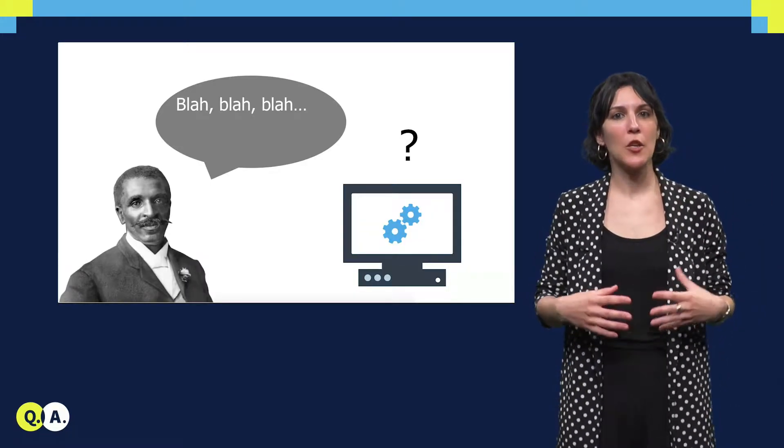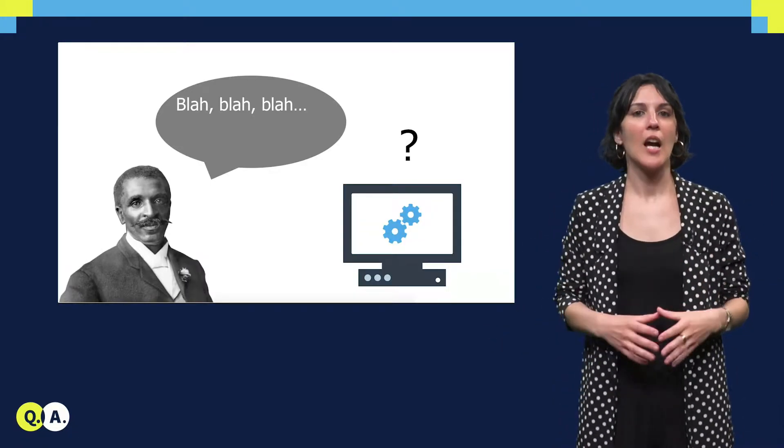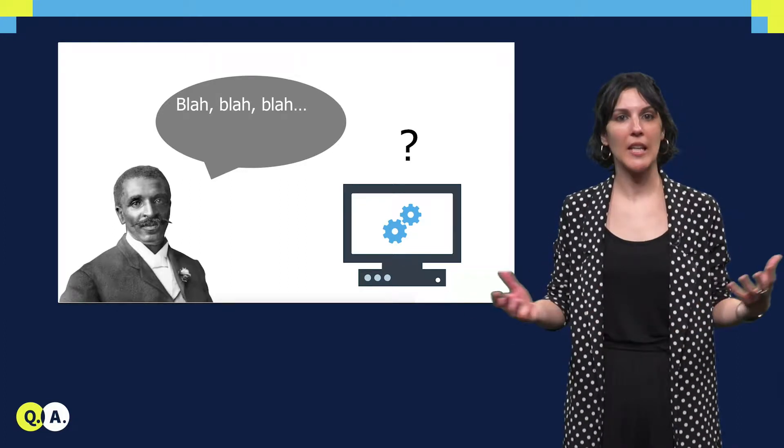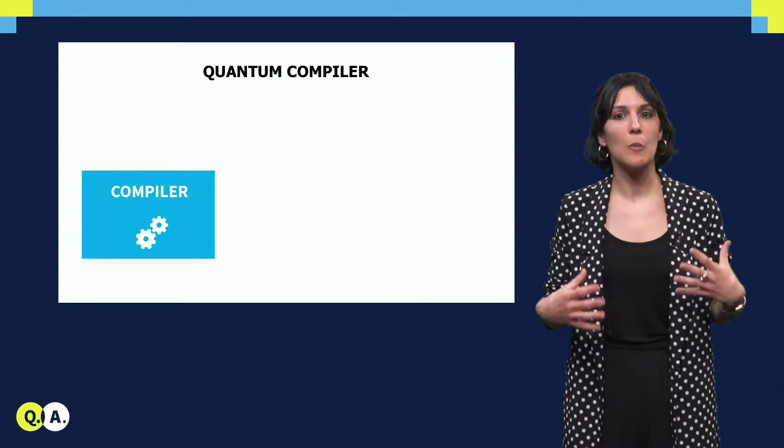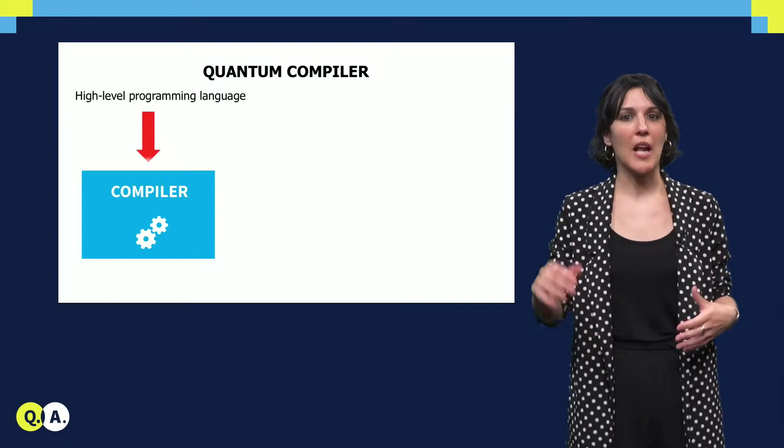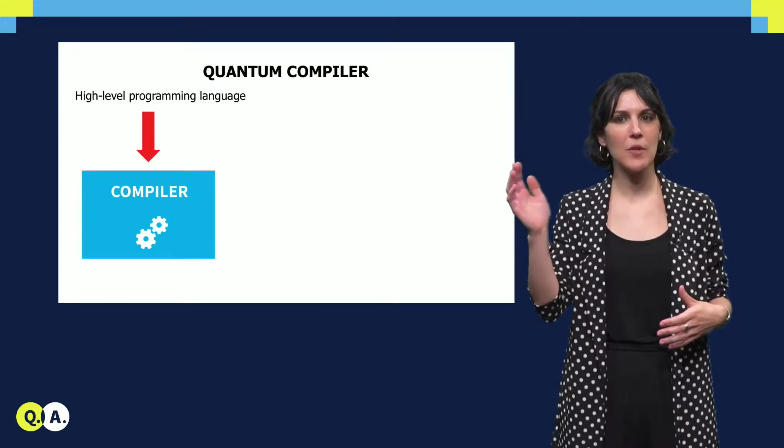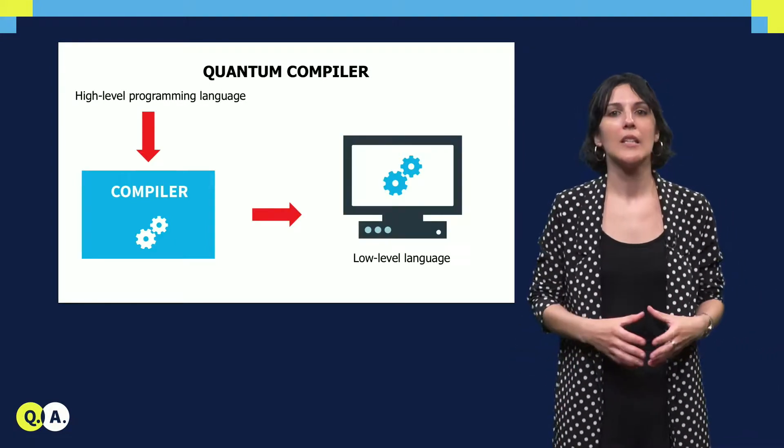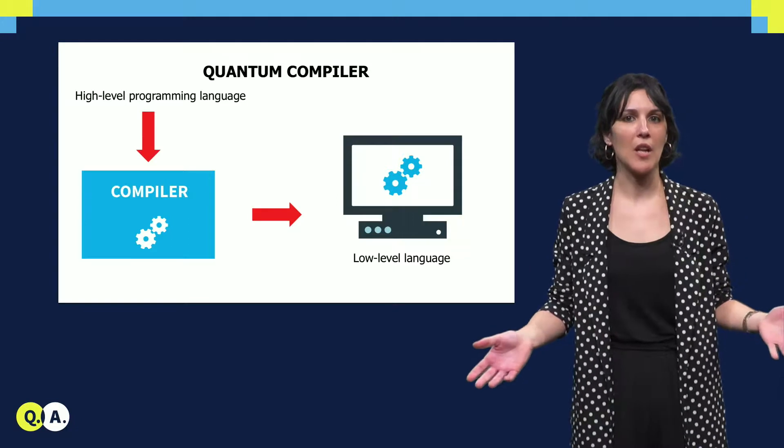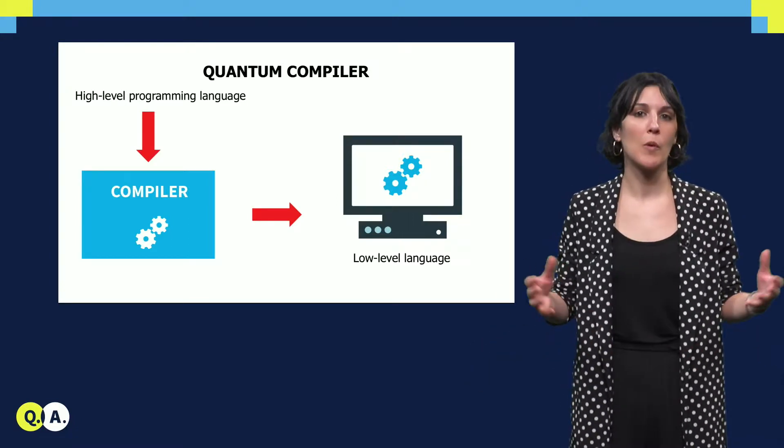However, this is still the human talking to the machine, and our quantum processor doesn't understand such a language. That's why we need a compiler that translates an algorithm written in a high-level language into a lower-level language or machine instructions that can be executed on a particular hardware, in this case, our quantum processor.